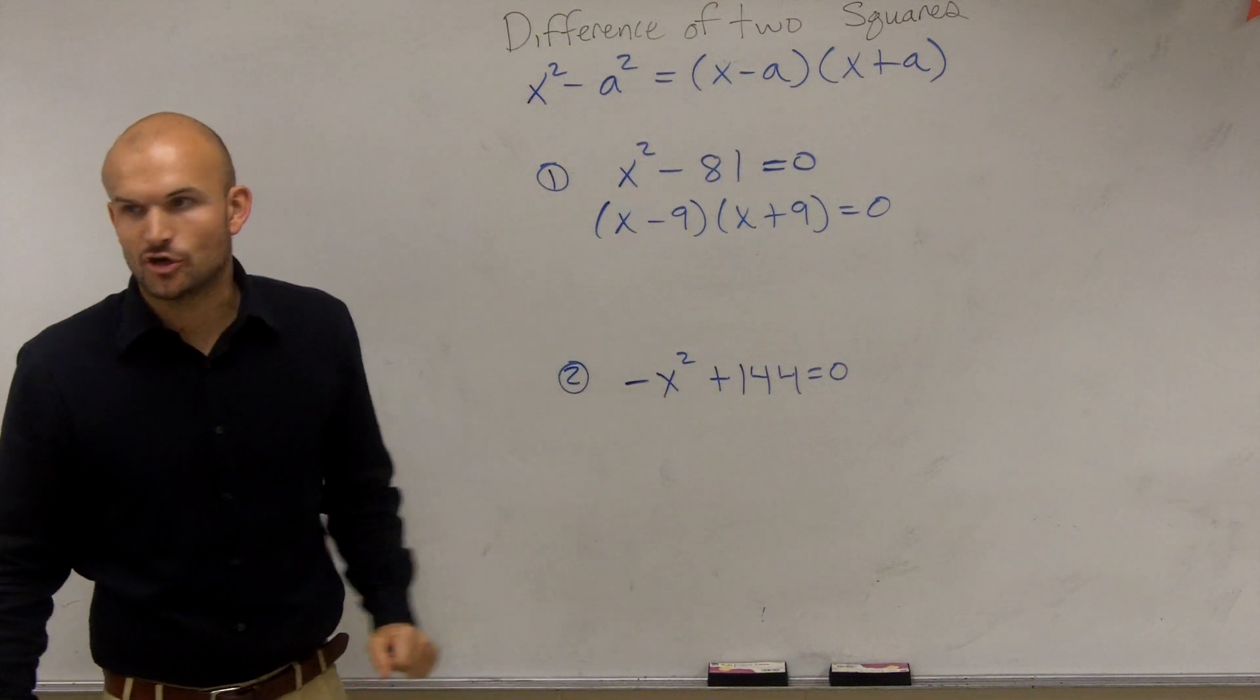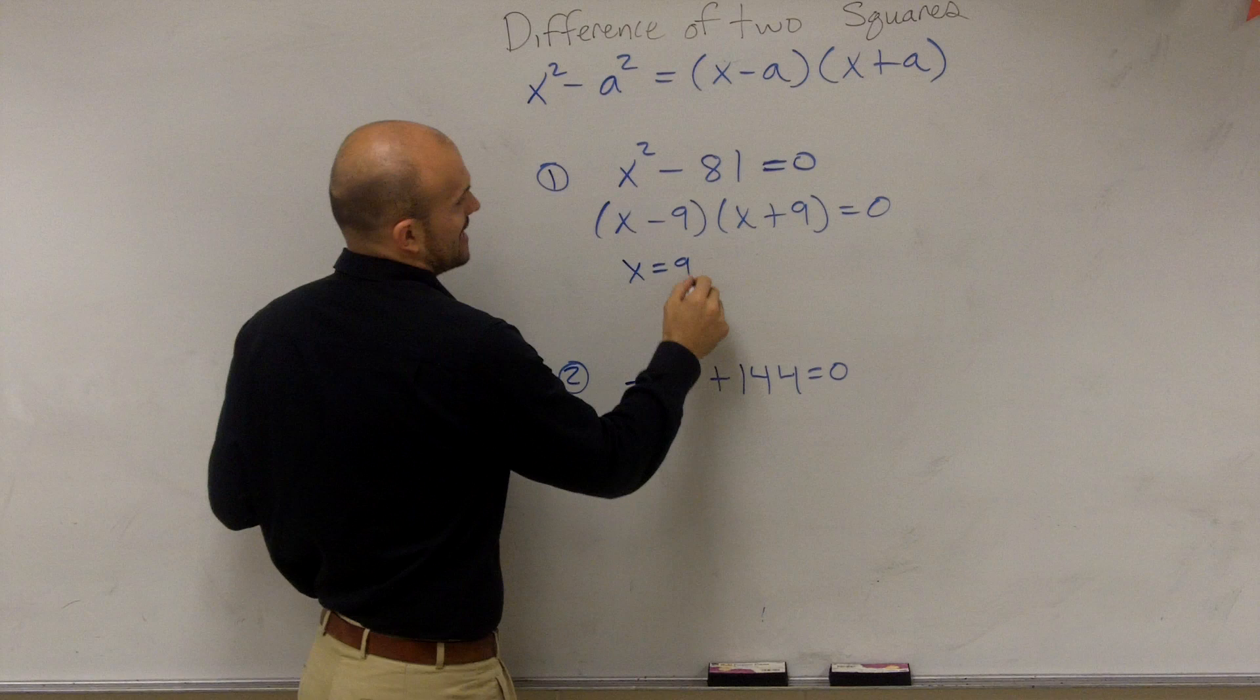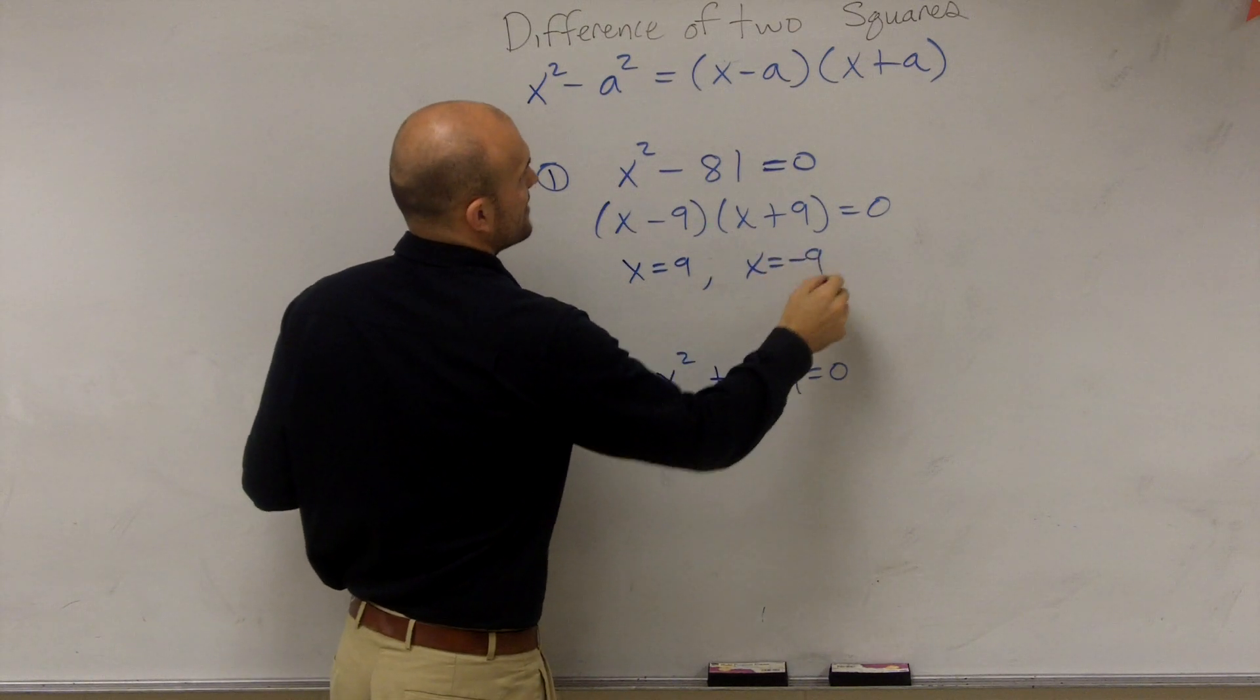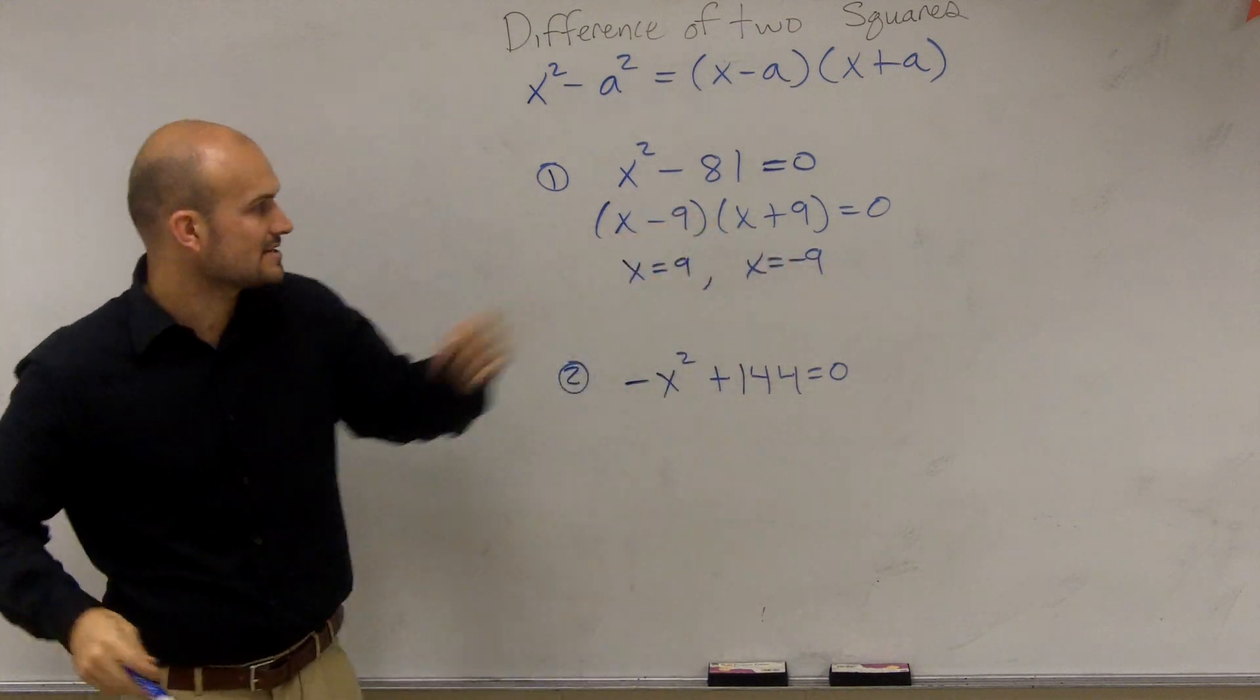Then, by using the zero product property, x equals 9 and x equals negative 9, right? Set them equal to 0, solve, you guys can get them.